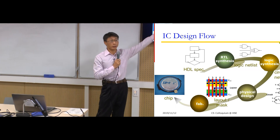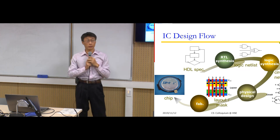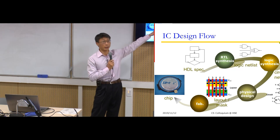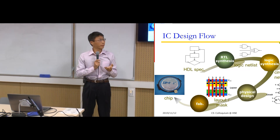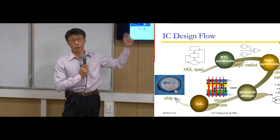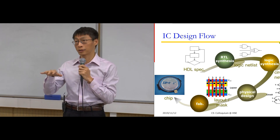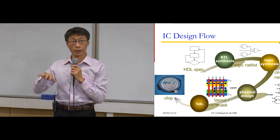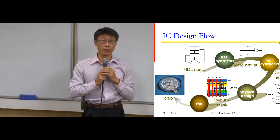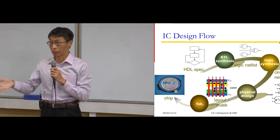For example, there will be RTL synthesis to translate the HDL specification into a circuit netlist. Then logic synthesis tools help translate this logic into a more refined transistor-level design. With physical design tools, we translate the transistor design into circuit layout. With this layout, we can make the photomask, which helps the manufacturer fabricate the integrated circuit in the foundry. After fabrication, we get the final integrated circuit, which you see applied everywhere in computers, mobile phones, and so on.